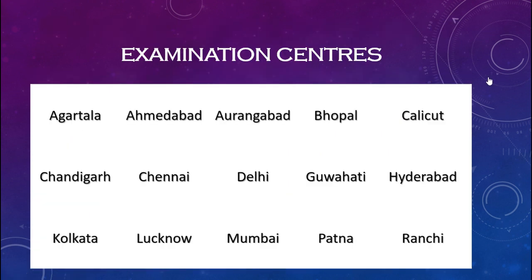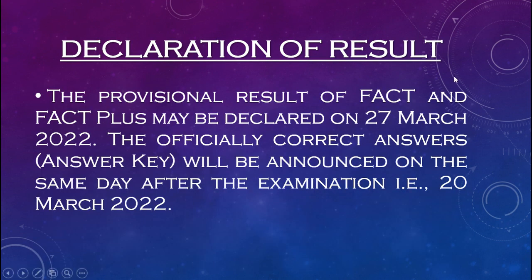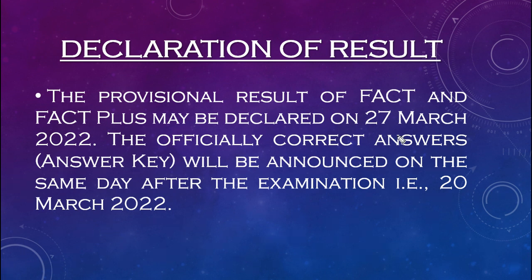There are 15 examination centers to choose from. The provisional result of FACT and FACT Plus may be declared on 27th March 2022. The officially correct answers will be announced on the same day after the examination, i.e., 20th March 2022. Please note these are tentative dates — if the exam is postponed or the date changes, these dates will change accordingly.